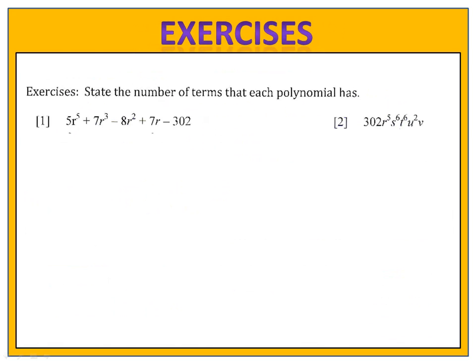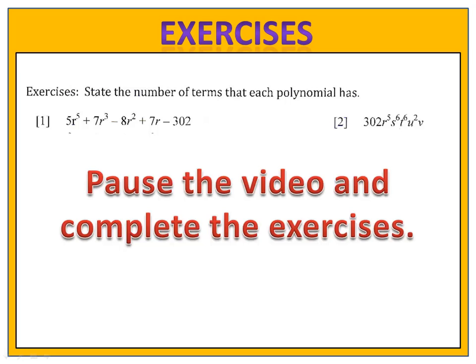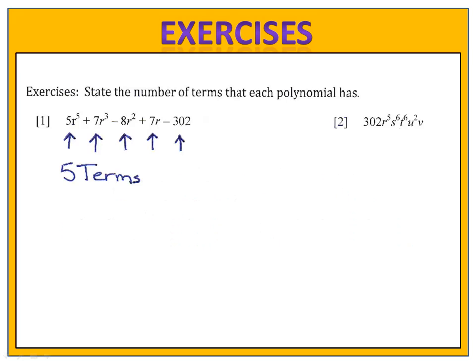In exercises 1 and 2, we want to determine the number of terms that each polynomial has. Please pause the video here, count the number of terms in each example, and then come back and we'll see how you did. In exercise 1, we have five terms — five monomials that make up this polynomial. In example 2, we only have one term. There's no addition or subtraction, just a single monomial, even though it has a lot of variables.